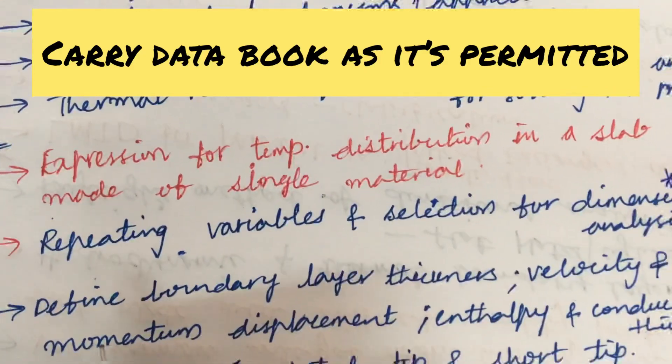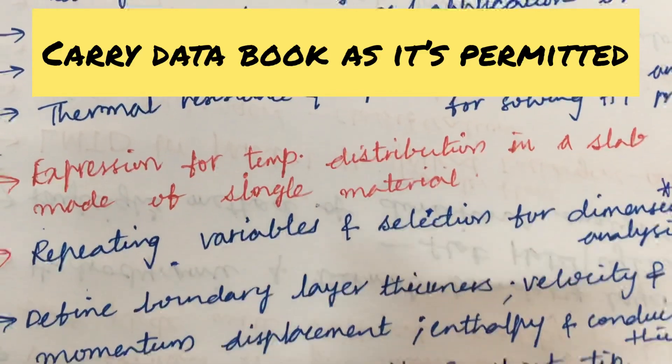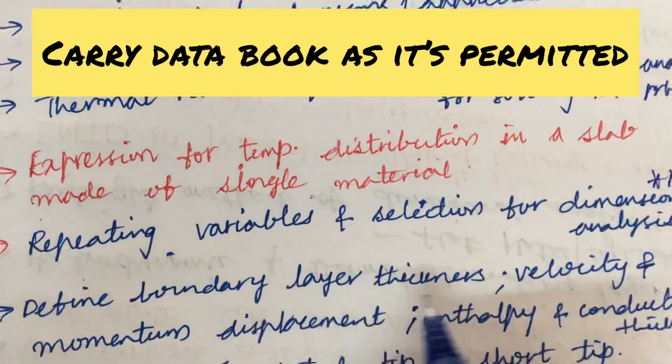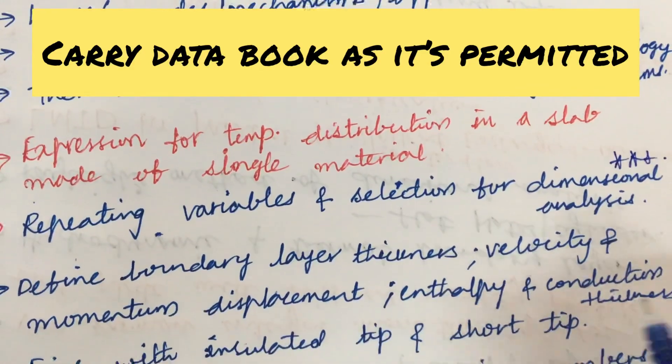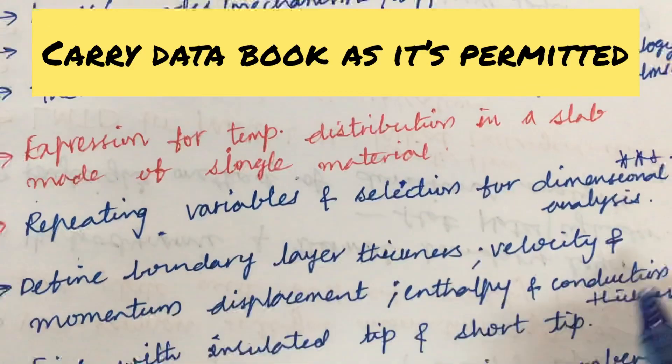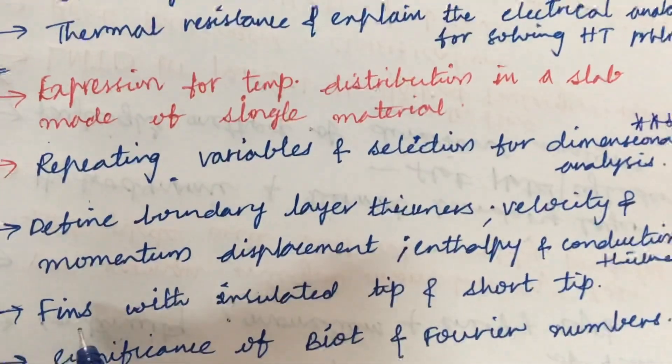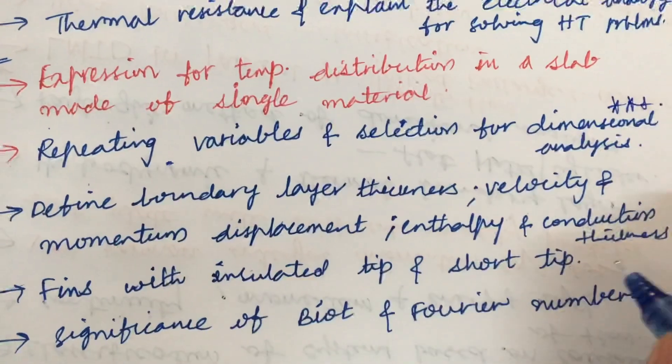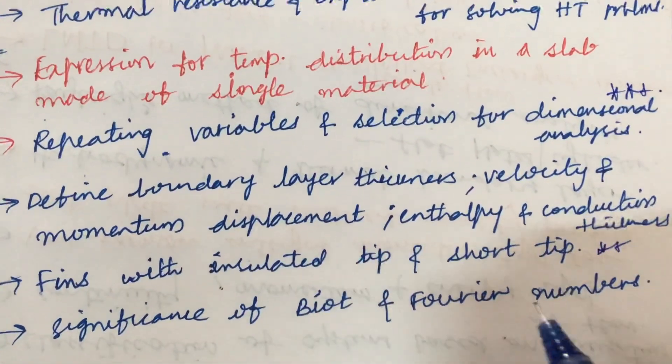Later, define certain terms like they may be asking you for five mark or five-five-five combination. Define boundary layer thickness, velocity and momentum displacement as well as enthalpy and conduction thickness related to this. If a problem is asked, this may be a five mark question.